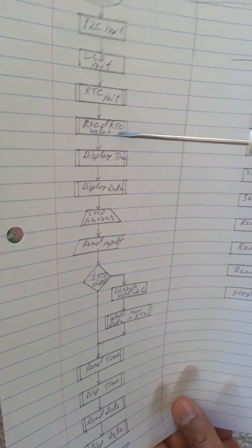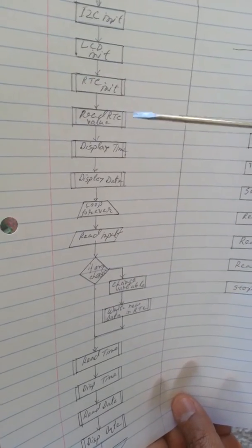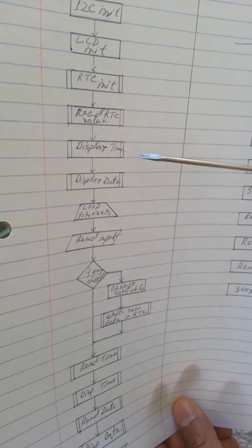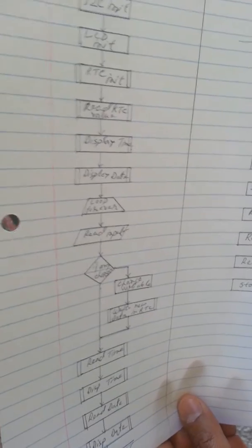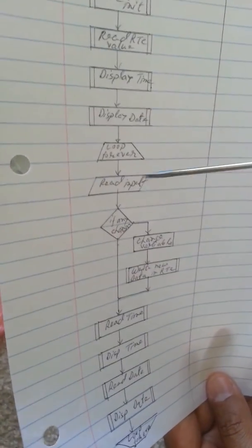Then you need to read the RTC value from the memory. I'll show you a separate flowchart for this, how to read the RTC, which is slightly complicated. Then you need to display time and date in a separate macro or same macro. This is the first thing you need to initialize at the beginning. Then you need to start a forever loop.